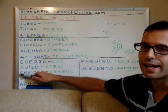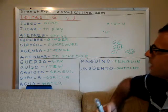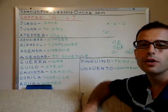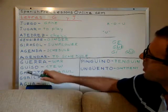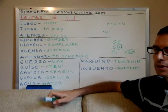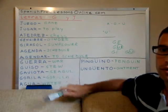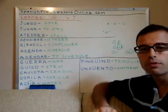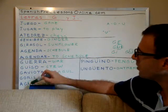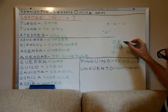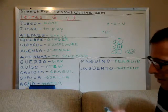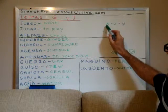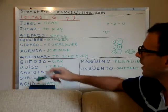Then we have 'gaviota' — this is seagull. Here we don't have the muted U, but for A, O, and U it's the same hard G sound, same as in English. 'Gorilla' — for a gorilla. And 'agua' for water — here the U is not mute, we do pronounce the U, because after the U we do not have the letter E nor I. So the G followed by A, O, or U is the hard G sound.